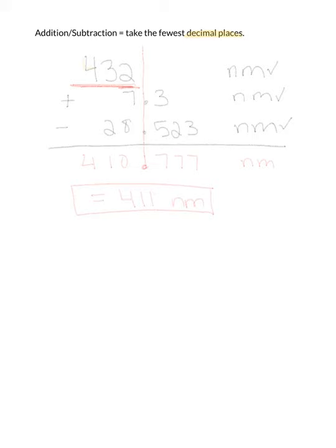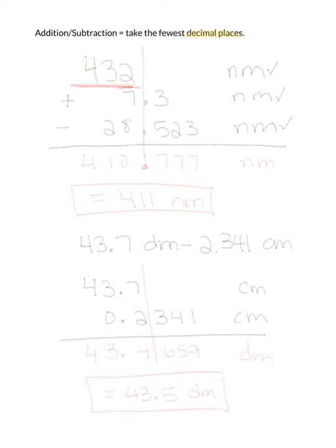Pause the video. You're going to take 43.7 decimeters minus 2.341 centimeters. Pause it, see if you can solve it and get the same solution that I do. I hope you got 43.5 decimeters. Notice that, and I wrote this incorrectly at the beginning of the problem, we had decimeters and centimeters, so I had better convert them before I can work with them. There's 10 centimeters in a decimeter. And so based on the same thing as before, 43.5 decimeters.